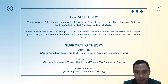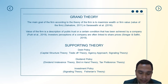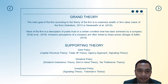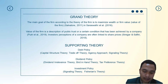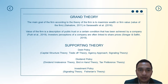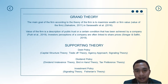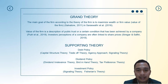For dividend policy, we use three theories. The first is dividend irrelevance theory, which states that a company's dividend policy does not affect firm value. The second is bird-in-hand theory, which states that firm value can be maximized by considering the dividend payout ratio. The third is tax preference theory — investors prefer to avoid tax payments, so instead of receiving dividends they hope for capital gains from shares.